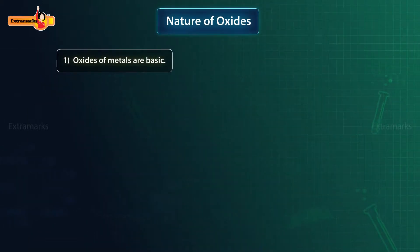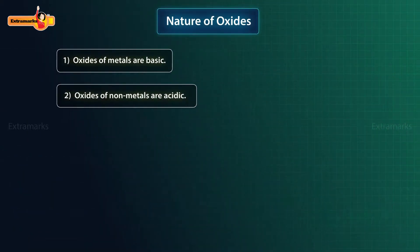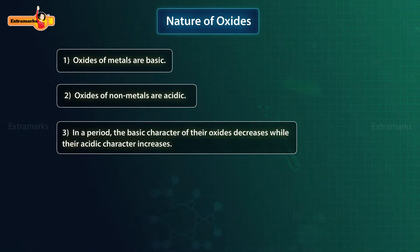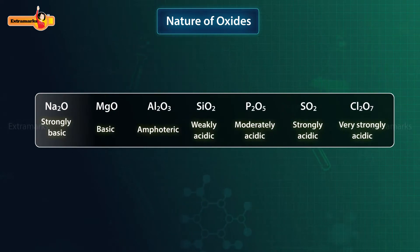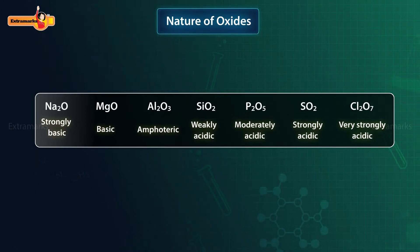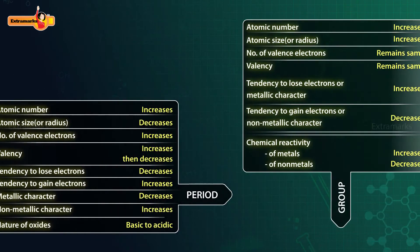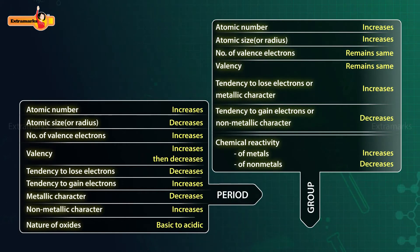Oxides of metals are basic and those of non-metals are acidic. Therefore, as we move from left to right across a period, the basic character of their oxides decreases while their acidic character increases. For example, in the third period, the acid-base character of oxides varies accordingly. Al₂O₃ is, however, amphoteric — that is, it reacts with both acids and bases. The variation in properties of elements in a group and in a period can be summarized as described above.